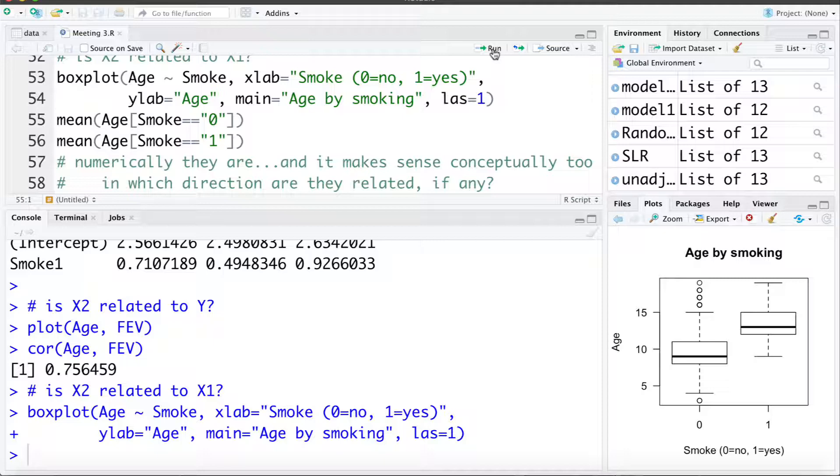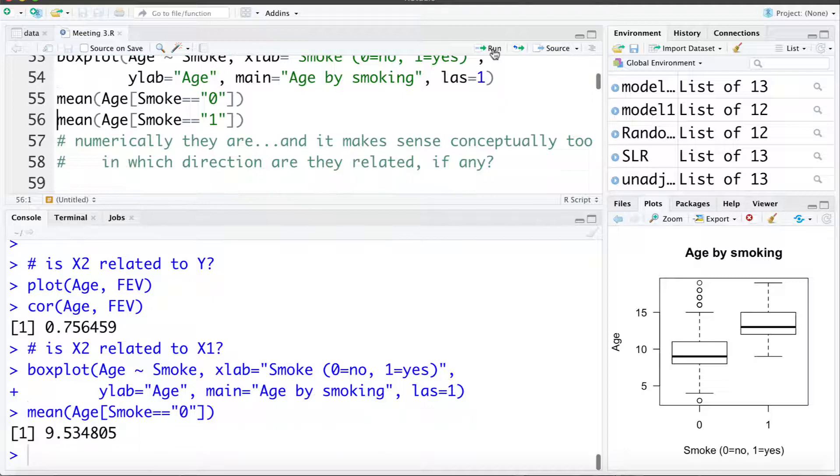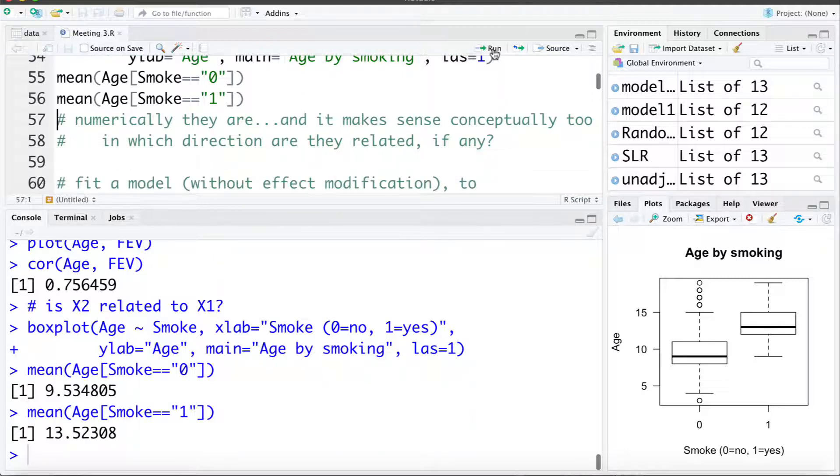We can also have R calculate the mean age for the non-smokers and the mean age for the smokers. We can see the smokers on average are about four years older, so numerically they are associated.